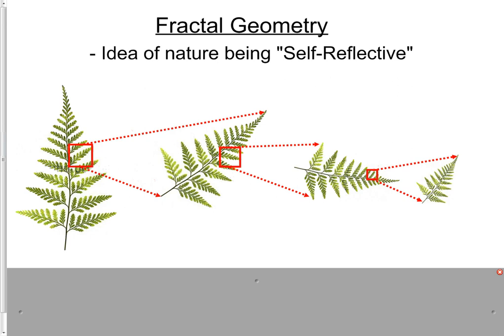Coastlines along the water, they're not perfect lines. They're jagged when you look at them on a map, but then when you look at them up close, it's still jagged. But in the same basic curvature, and you look at it even closer, still jagged, same basic curvature, over and over again. So fractal geometry, one of the things it does is it tries to define this idea of nature being self-reflective.